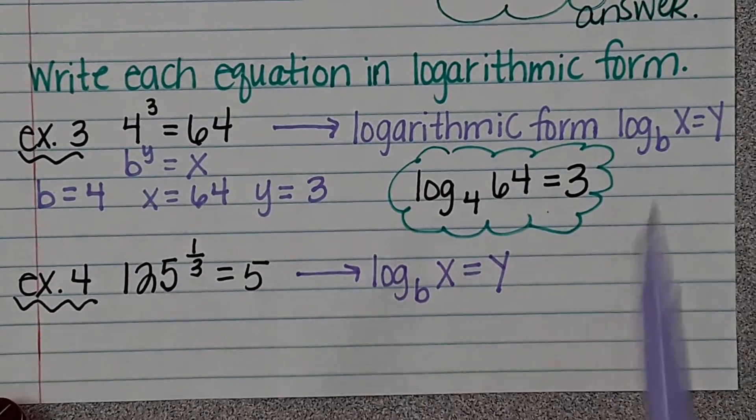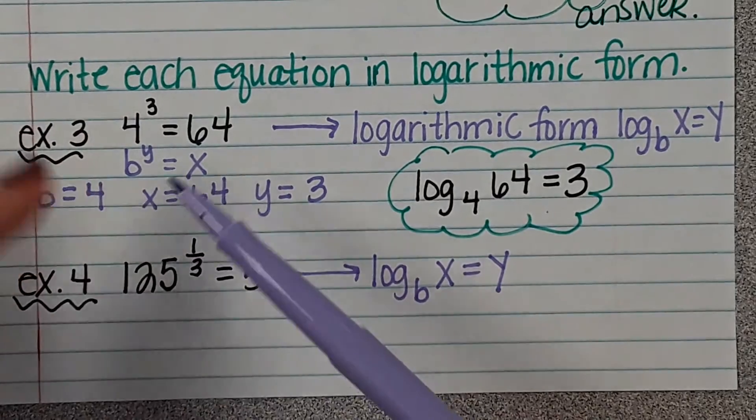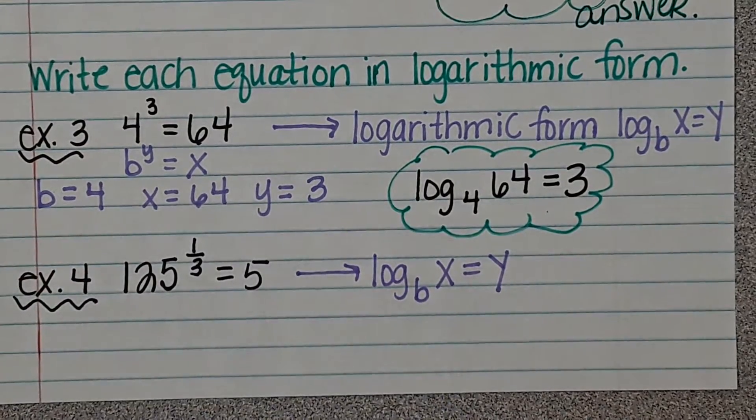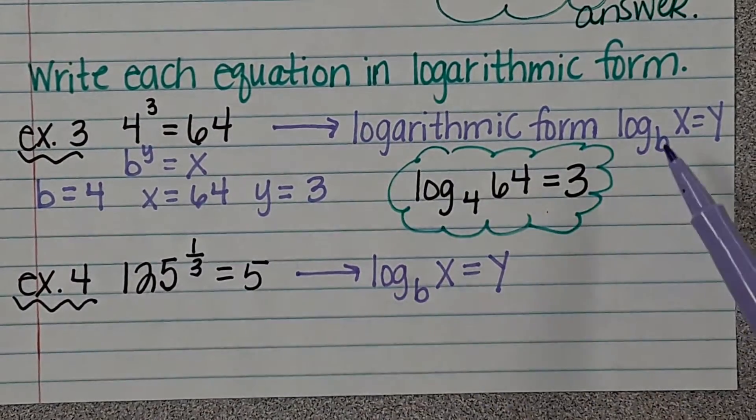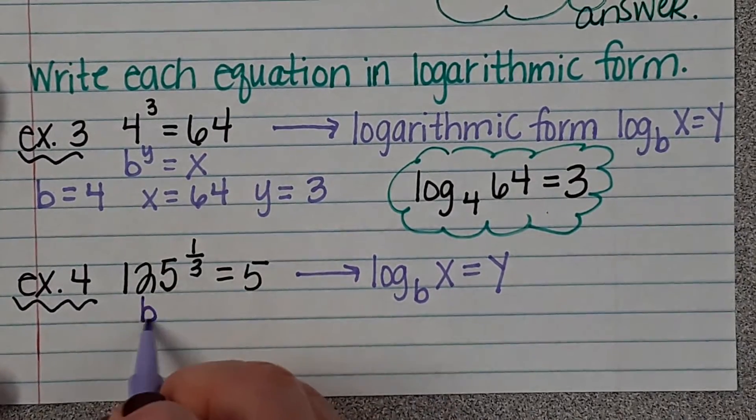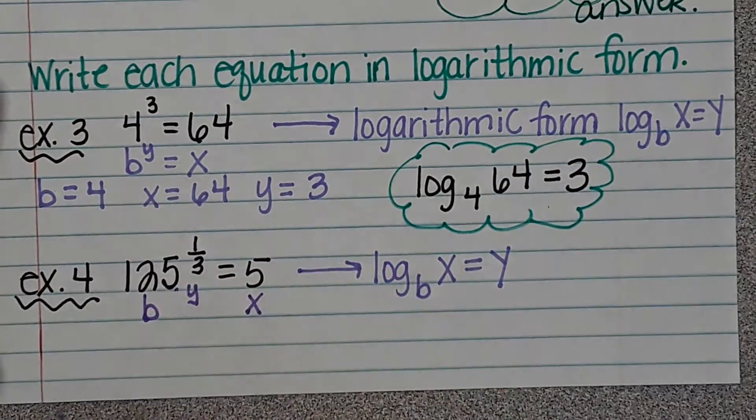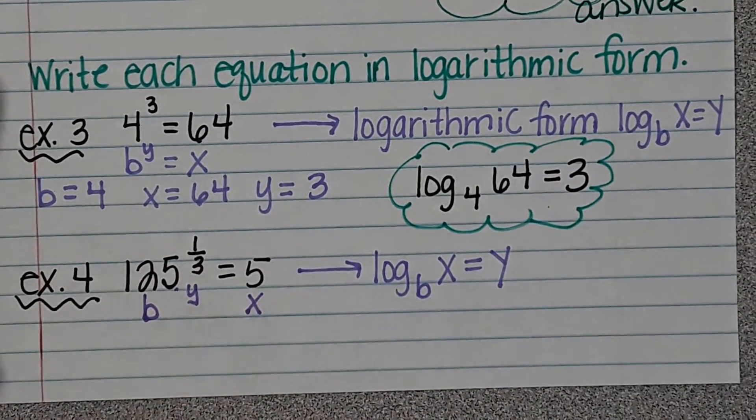So again, how do you know this? Because it's asking you, this is exponential form. You know it's exponential form because it doesn't have the word log in it. And we want to write it in logarithmic form. So remember, this is b, this is y, this is x. Just to make sure that we understand that again.